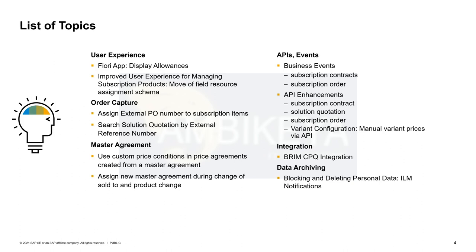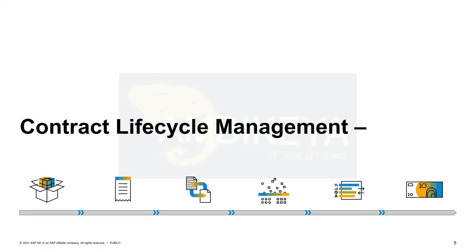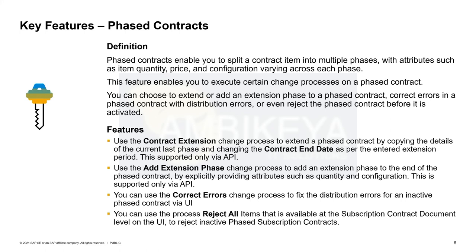A phased contract is a contract where you split your contract phases already in advance during the contract creation phase. For example, in year one you might have a contract with 20 cloud seats, in year two you will have 50, and in year three you go to the platinum contract and buy another 500 seats. You could run this via change processes, but phased contracts allow you to plan such a contract in advance and inform follow-up processes about how the contract will adjust over the coming years or months.